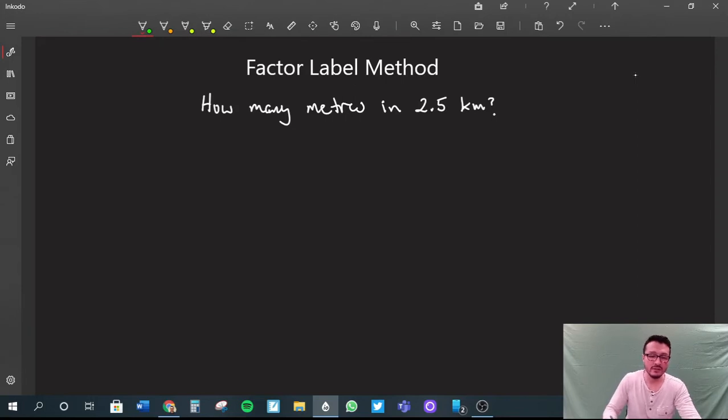The general form will be: write the unit that you need, then an equal sign, then any value you're given without forgetting the units. So anything you are given goes next. Then you have to multiply by a conversion factor.